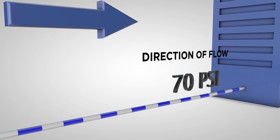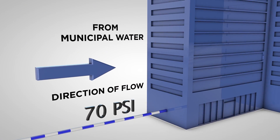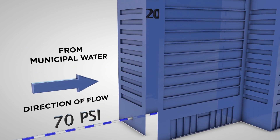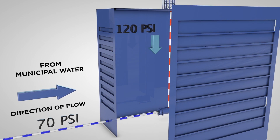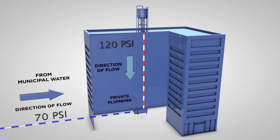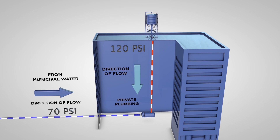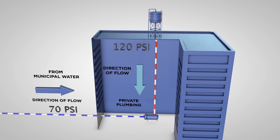Backflow from back pressure is caused when the water system is connected to a system or supply operating at a higher pressure than the municipal water system, such as a booster pump or elevated piping.